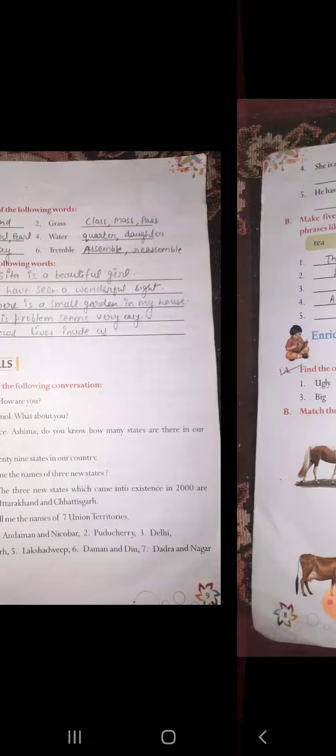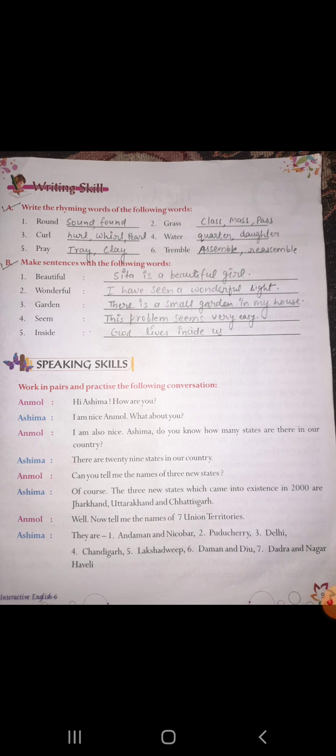The next exercise is to write rhyming words. Rhyming words are the words jinka ending jo hota hai woh similar hota hai. For example: round, sound, found; curl, hurl; prey, tray, cray — and so on.